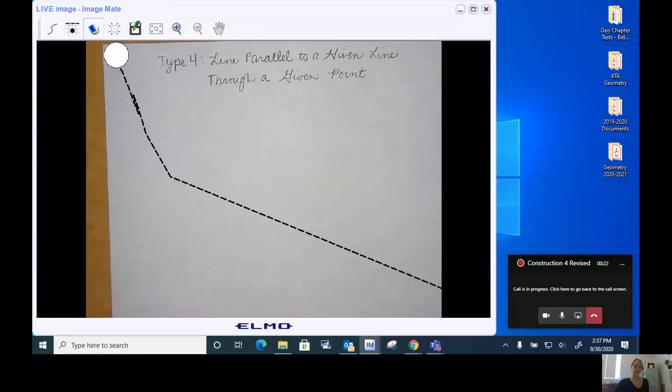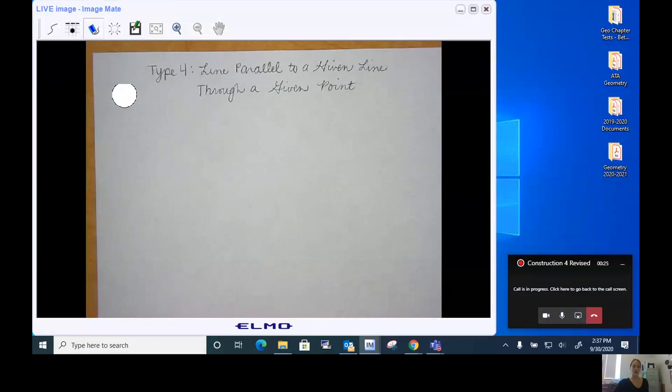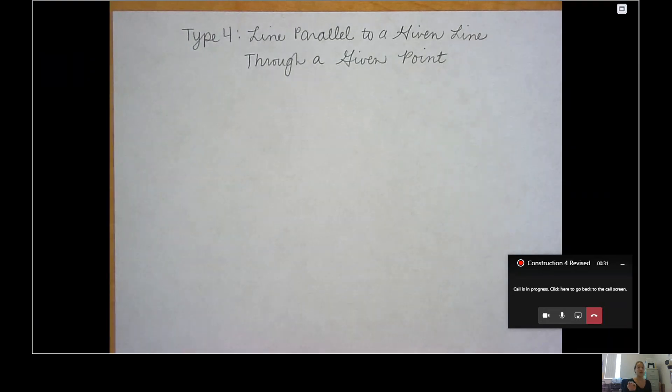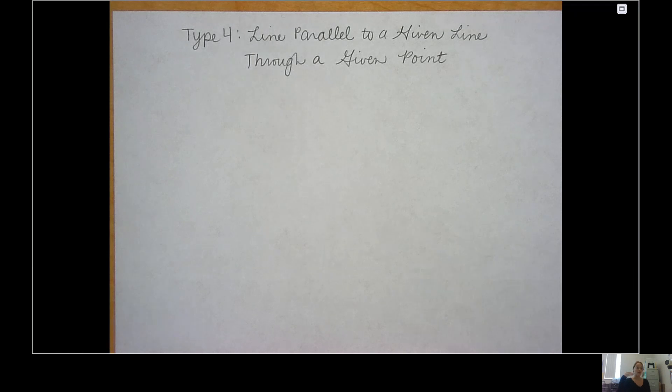Okay, sorry about that guys. For our fourth type of construction, we are going to be constructing a line parallel to a given line that goes through a given point. So at the end I want to have two parallel lines that go through a given point.